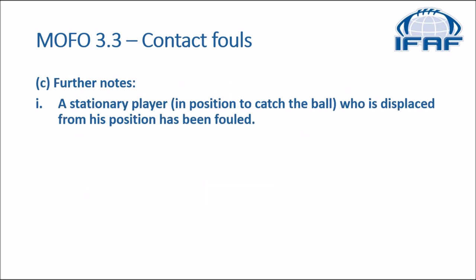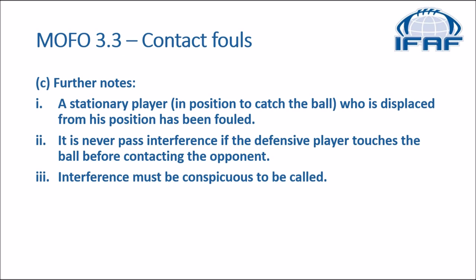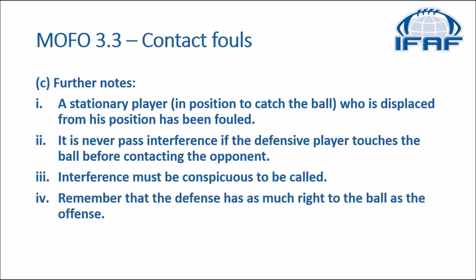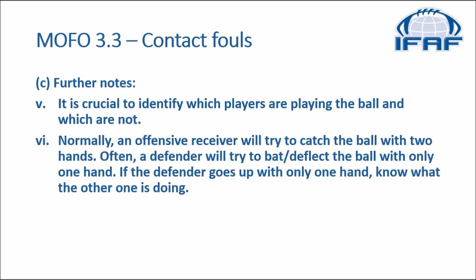Further notes. One, a stationary player in position to catch the ball who is displaced from his position has been fouled. Two, it is never pass interference if the defensive player touches the ball before contacting the opponent. Three, interference must be conspicuous to be called. Four, remember that the defense has as much right to the ball as the offense. Five, it is crucial to identify which players are playing the ball and which are not. Six, normally an offensive receiver will try to catch the ball with two hands. Often a defender will try to bat or deflect the ball with only one hand — if the defender goes up with only one hand, know what the other one is doing.